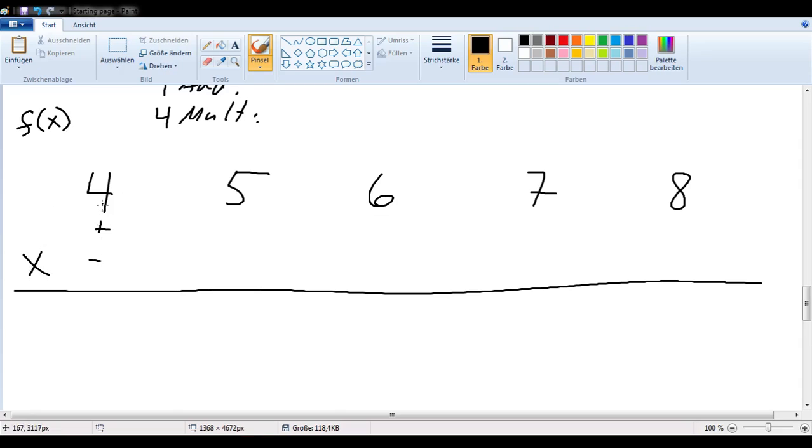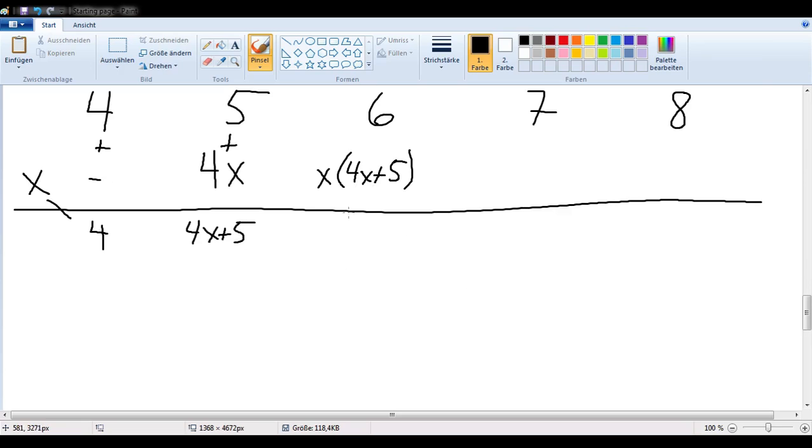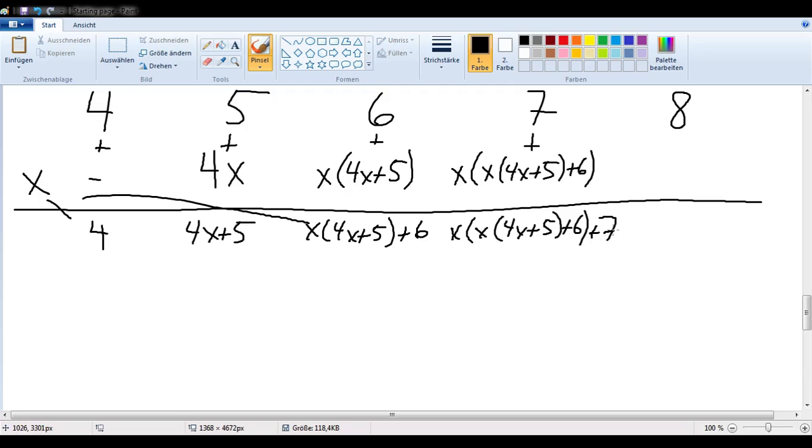So if I add here, 4 plus nothing, I get 4. Now I multiply these two, I get 4x. Now I add these again, so I get 4x plus 5. Now I multiply again, so that gives me x times 4x plus 5. And then I add again, so x times 4x plus 5 plus 6. Now I multiply again, so I end up with x times 4x plus 5 plus 6. And then I have to add again, so I have x times 4x plus 5 plus 6. And then I add my x times 4x plus 5 plus 6 plus 7.